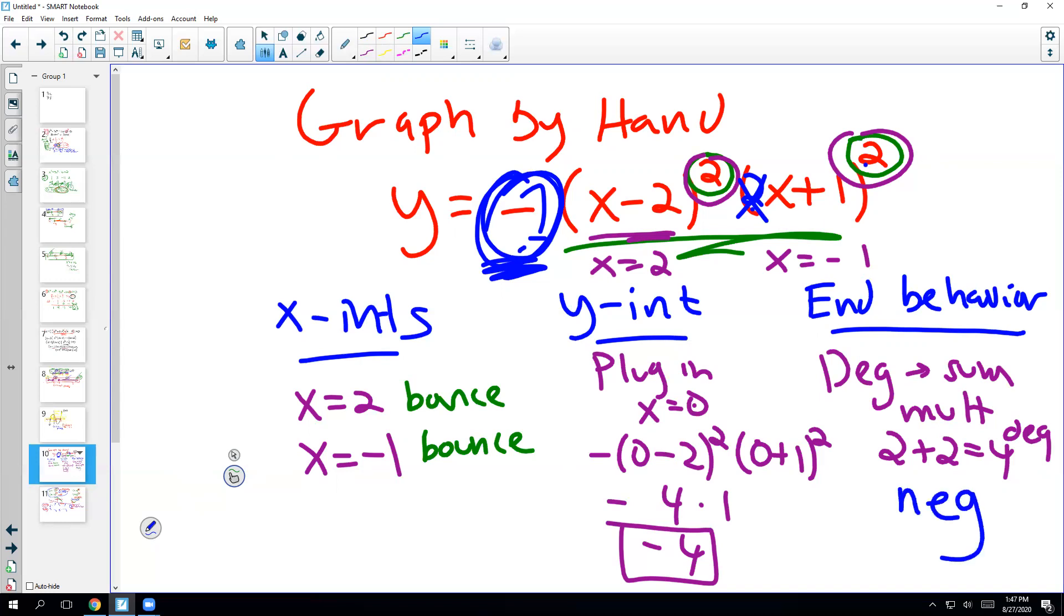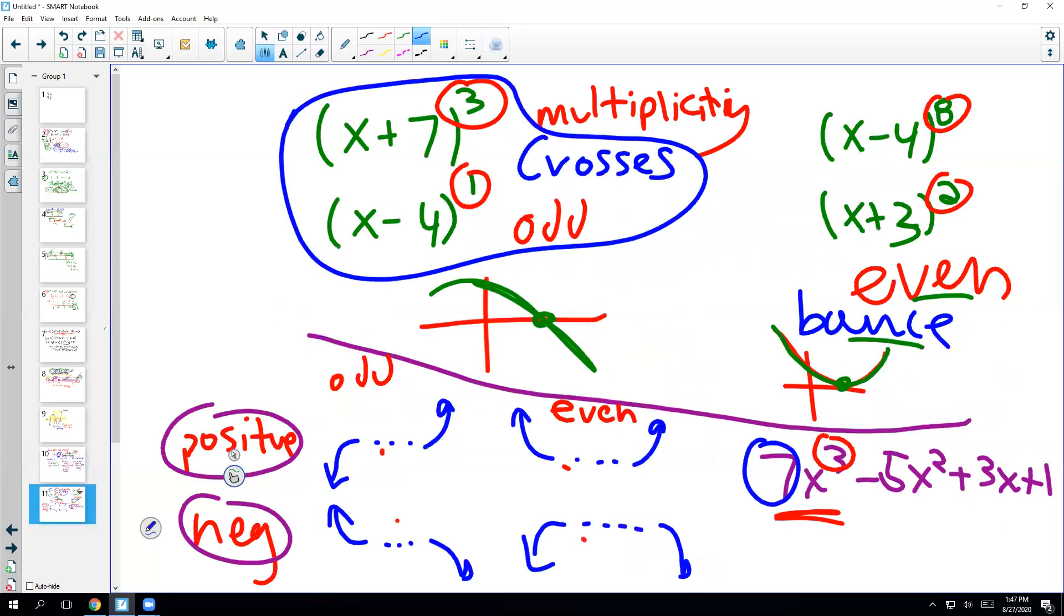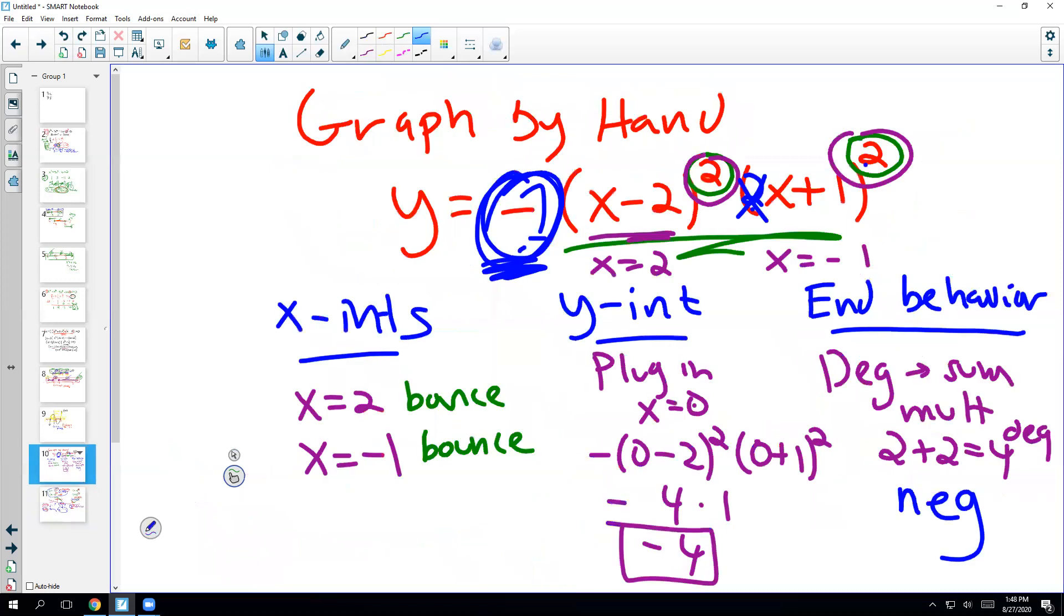So degree 4 negative, now we can go to our chart here. So it's degree 4, so that's even. And it's negative, so we kind of see that this is our end behavior for this problem. By the way, all this information is on the homework cheat sheet, so you don't have to feel like you have to memorize this right now. Okay, so our end behavior looks like this.